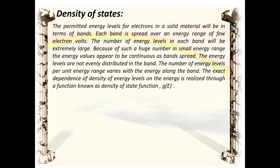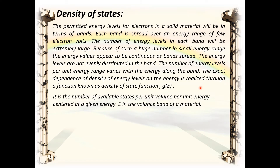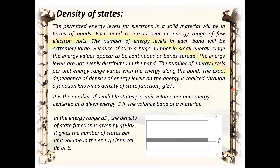Density of states: The permitted energy levels for electrons in a solid exist in bands, each spread over an energy range of a few electron volts. The number of energy levels in each band is extremely large, so energy values appear continuous. The energy levels are not evenly distributed; the number of energy levels per unit energy range varies with energy along the band. This dependence is described by the density of state function g(E) — the number of available states per unit volume per unit energy centered at a given energy E in the valence band. Within an energy interval dE at E, g(E)dE gives the number of states per unit volume.